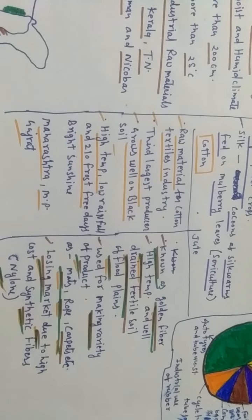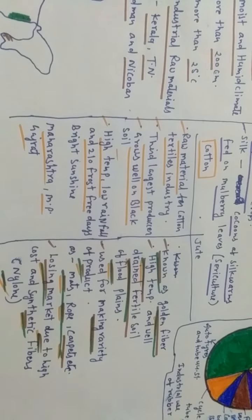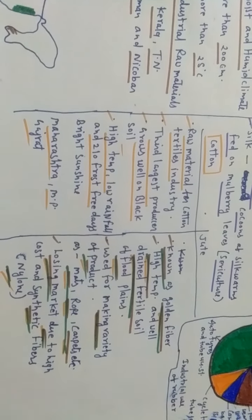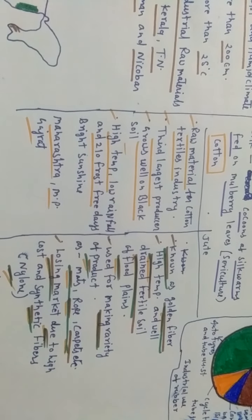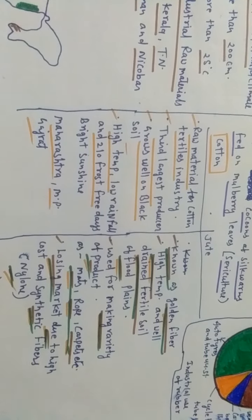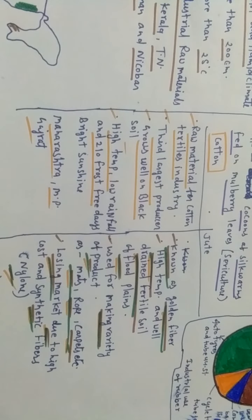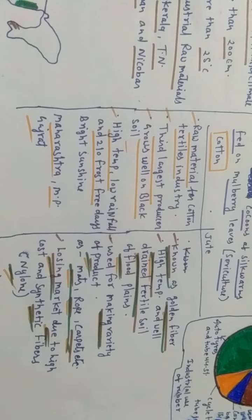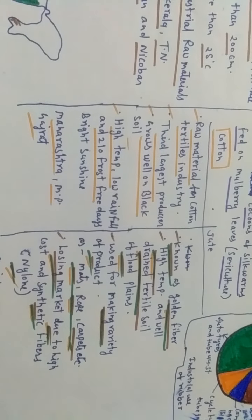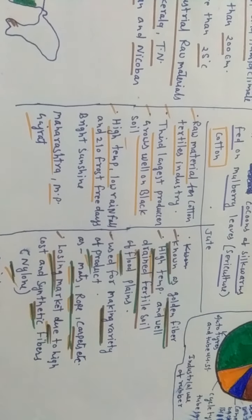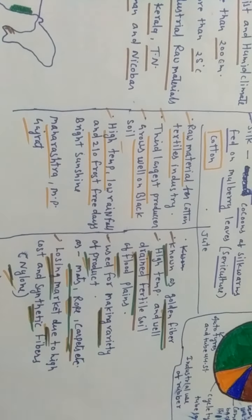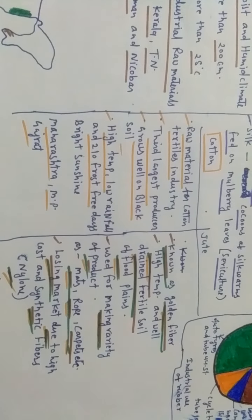Two types of fiber crops: one is cotton and second is jute. Cotton is where we get the raw material from the cotton textile industries. India is the third largest producer of cotton. It grows well in black soil, high temperature, low rainfall, and 210 frost-free days and bright sunshine. Maharashtra, UP, and Gujarat are the leading producers of cotton. The soil which is known as black soil is also known as cotton black soil.